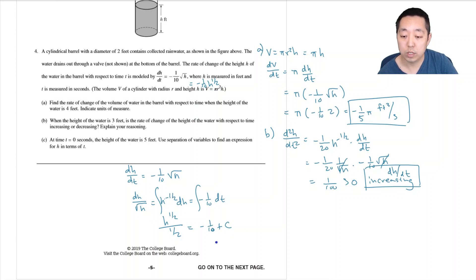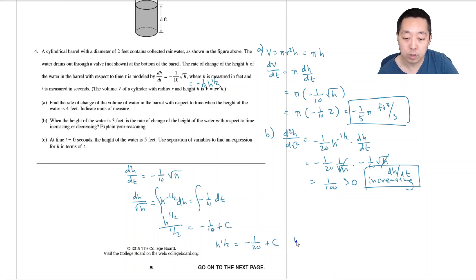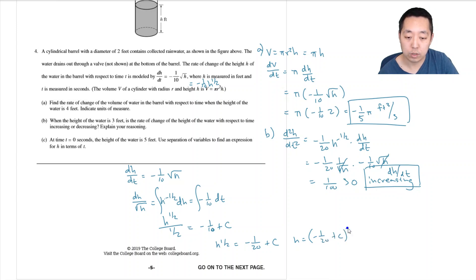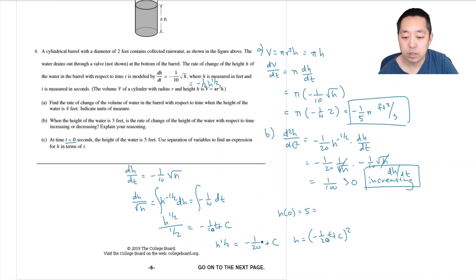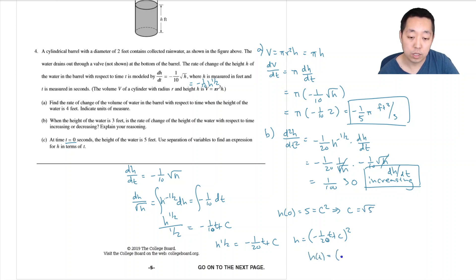Multiplying everything by one-half, h to the one-half equals negative one over twenty t plus C, where the constant absorbs the factor. Squaring both sides gives h equals the quantity (negative t over twenty plus C) squared. Applying the initial condition h(0) equals five: plugging in t equals zero gives C squared equals five, so C equals the square root of five. Therefore h(t) equals the quantity (negative t over twenty plus √5) squared.